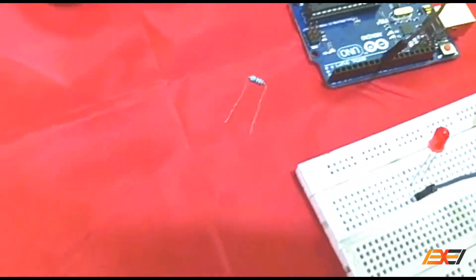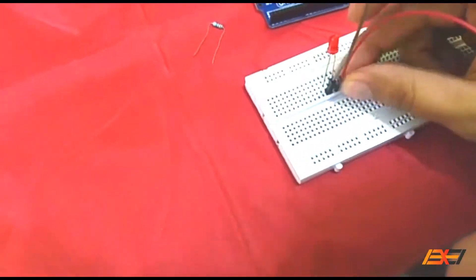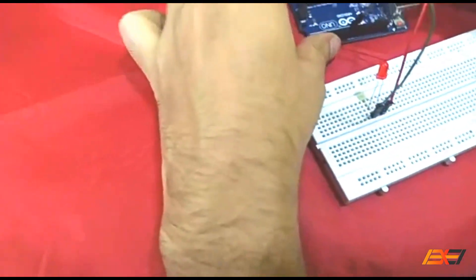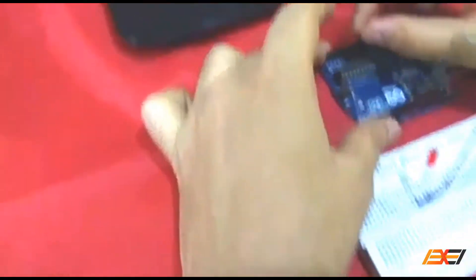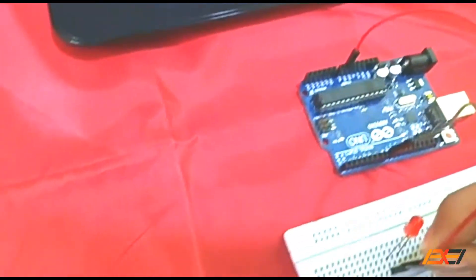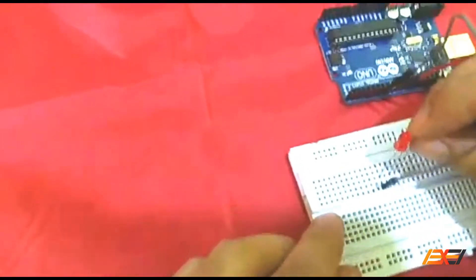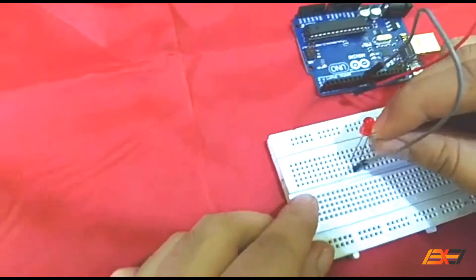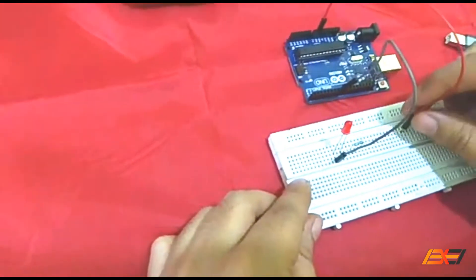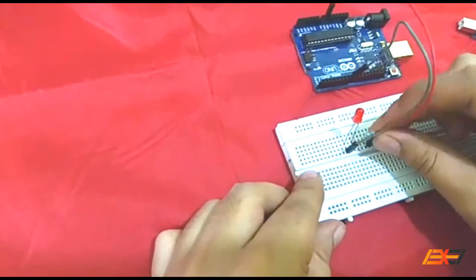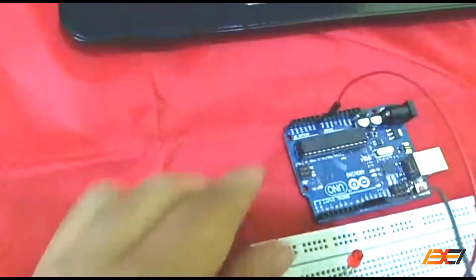The other part of the LED goes to ground on the Arduino board. We place a resistor here, and from the resistor, we place a jumper directly to the ground.